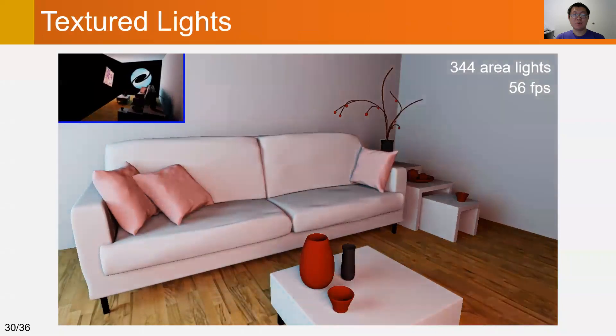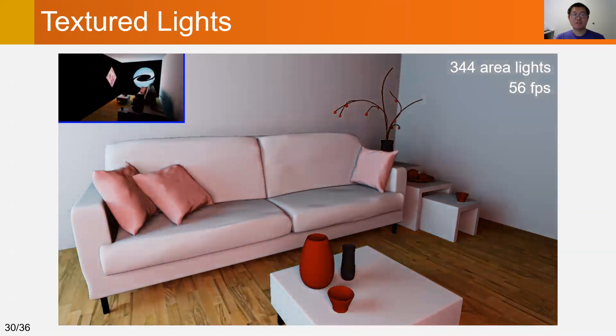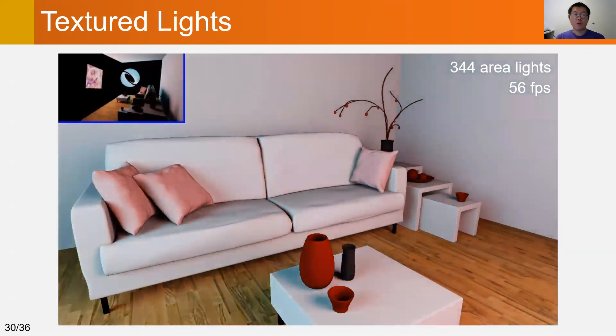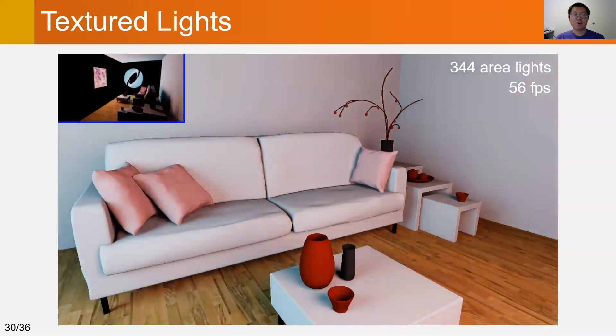In this example, we show a real-time rendering of a room illuminated by two moving textured lights. We break down the textured lights into hundreds of triangular light sources, and each of them emits uniformly. Our method runs at 56 frames per second.